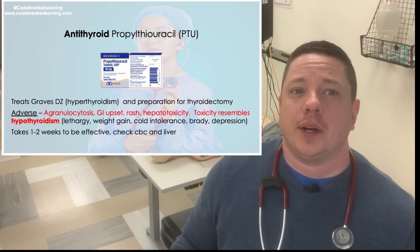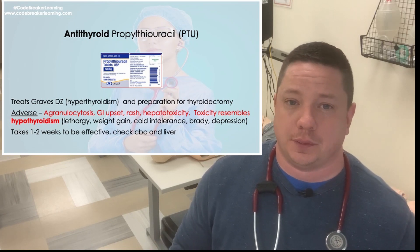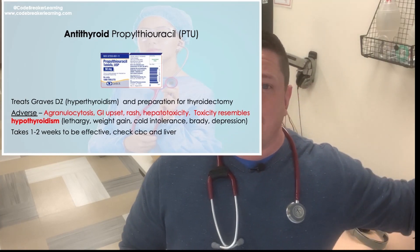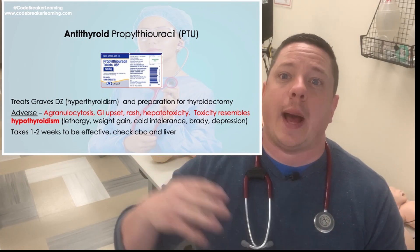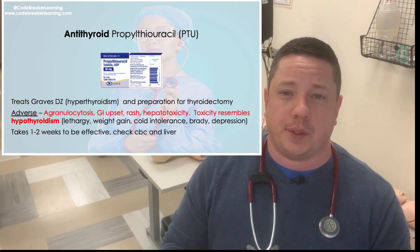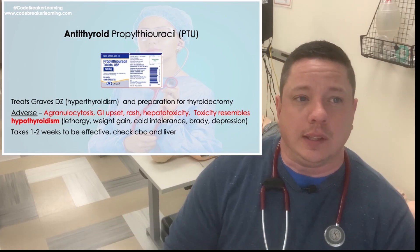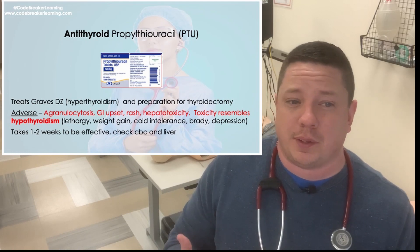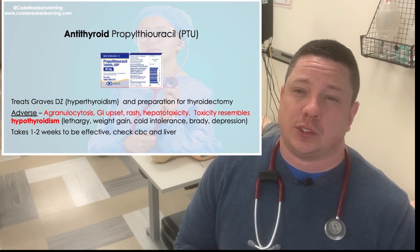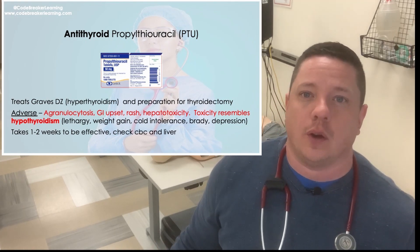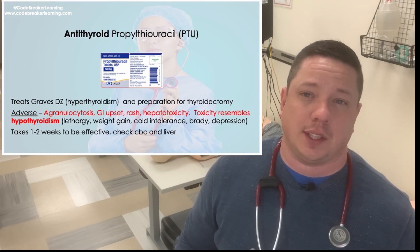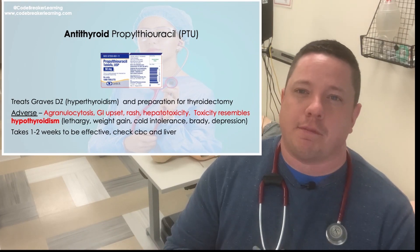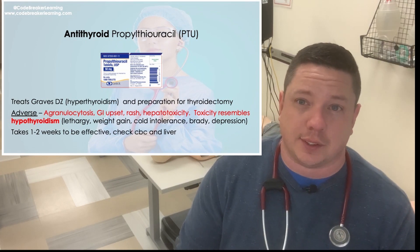The next medication is an antithyroid drug: propylthiouracil, also known as PTU. Levothyroxine supplemented T3 and T4 when you didn't have enough. PTU is for when you're hyper-secreting — hyperthyroidism, also known as Graves disease. Start associating those names for the NCLEX. PTU is given to treat hyperthyroidism and Graves disease, sometimes in preparation for a thyroidectomy. This medication can cause agranulocytosis, which means decreasing white blood cells. You need to check the CBC. The normal range for white blood cells is approximately 5,000 to 10,000.